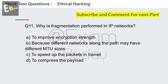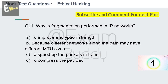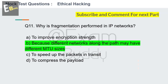Options: to improve encryption strength, because different networks along the path may have different MTU sizes, to speed up the packets in transit, to compress the payload. Your time starts now. The answer is B: because different networks along the path may have different MTU sizes. Now question number 12.